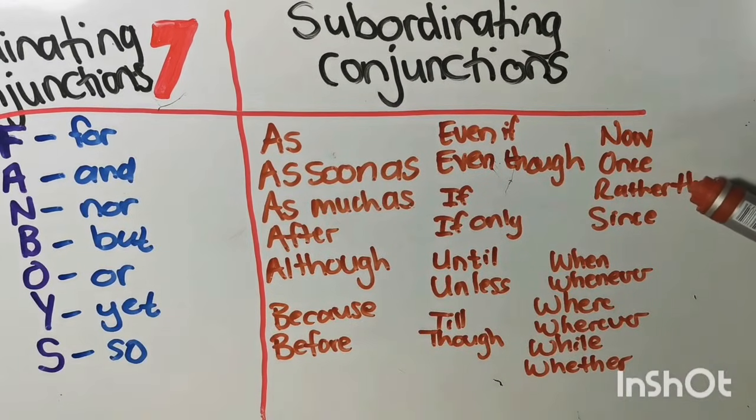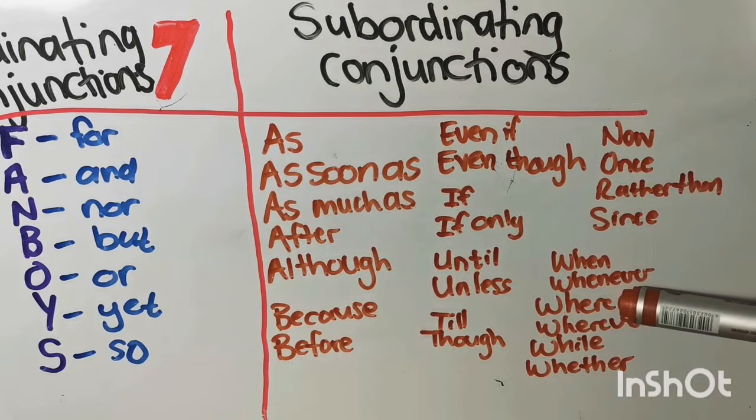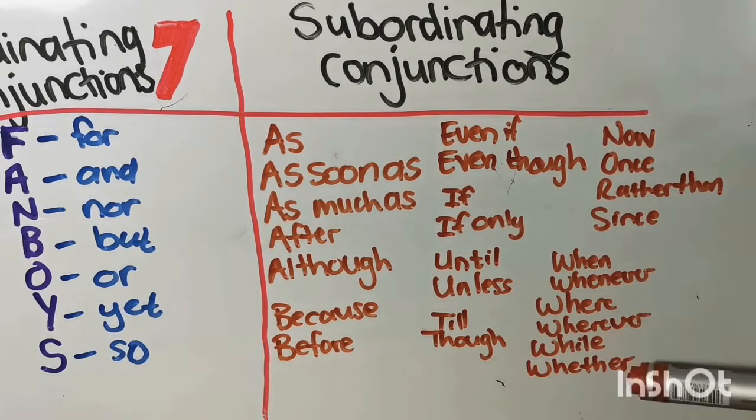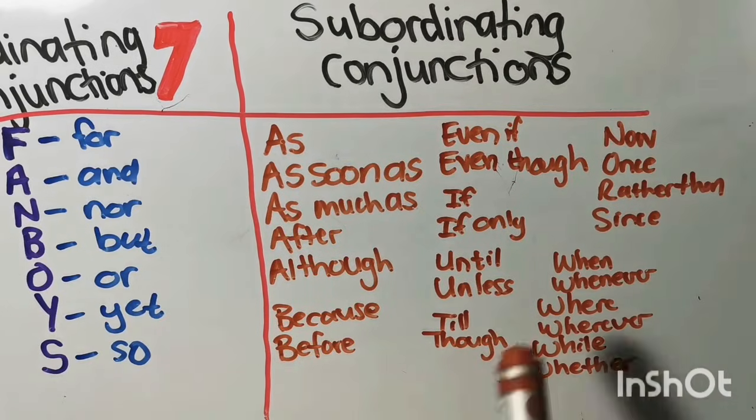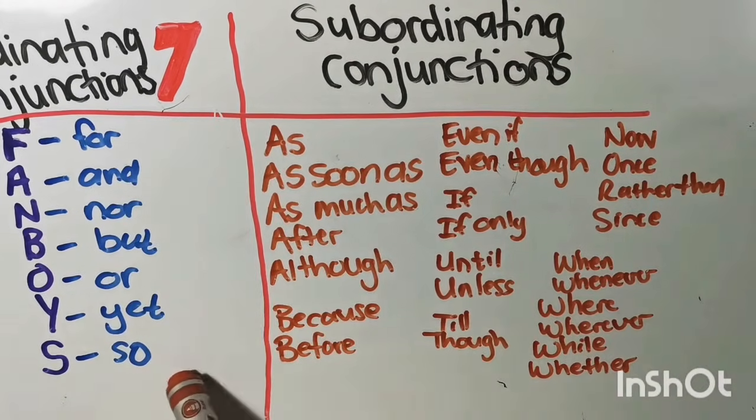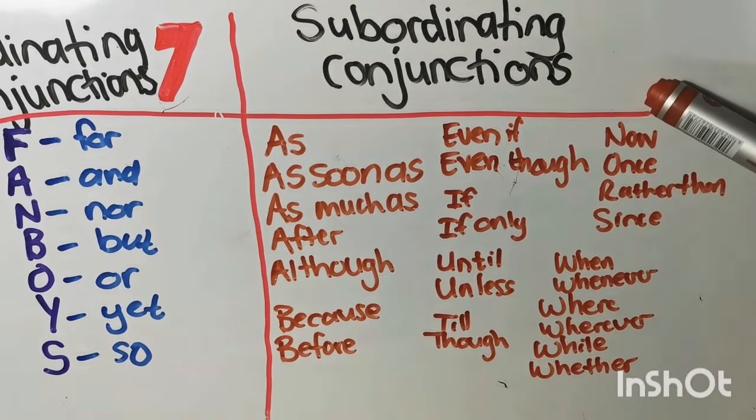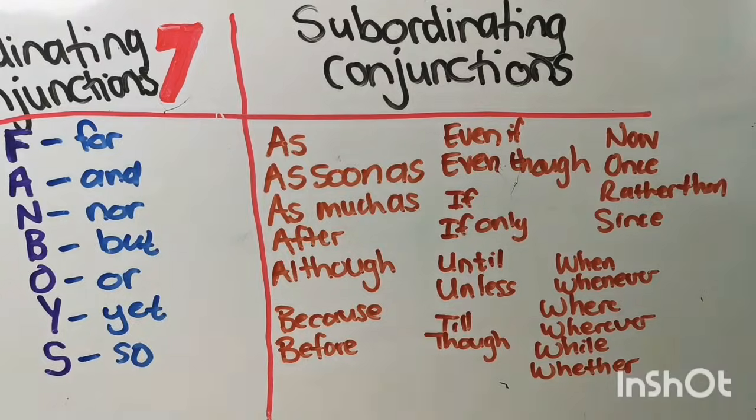Then we have NOW, ONCE, RATHER THAN, AND SINCE, WHEN, WHENEVER, WHEREVER, WHILE, AND WHETHER. And that is why you understand that I say that it is much easier to know these seven. Because if you know these seven, then automatically you will know these ones as subordinating conjunctions.